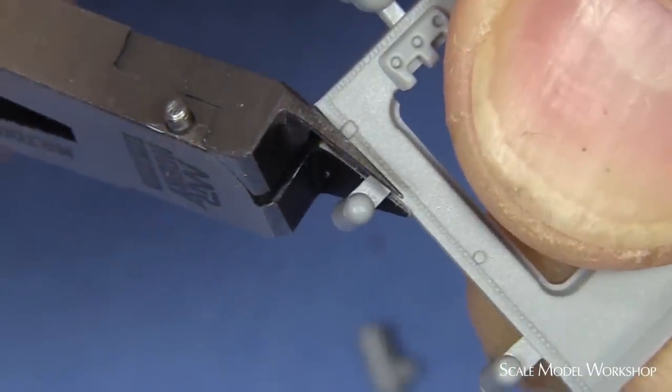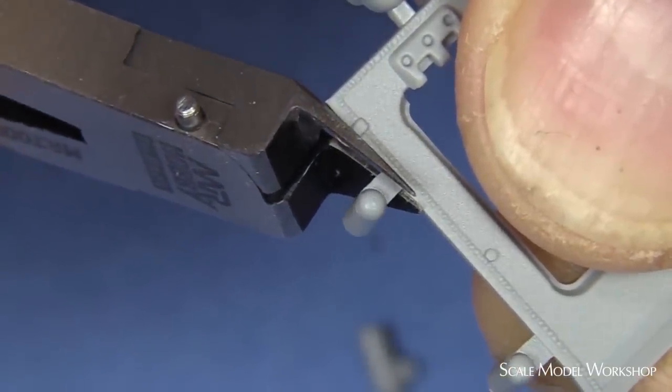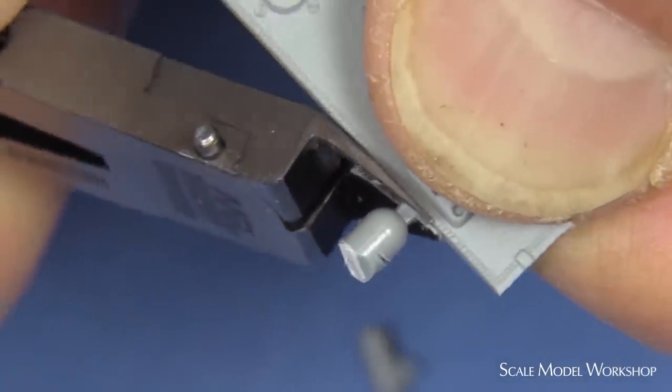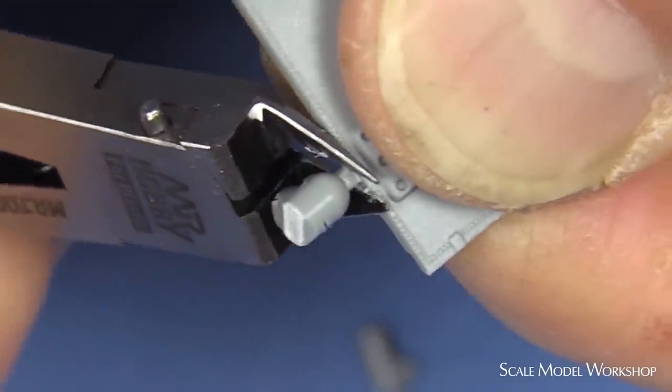One way to avoid this is to angle the nipper a bit so that you can seat both jaws against the edge of the part before you cut. Or you can use light pressure and rotate the nippers to create a score around the gate.